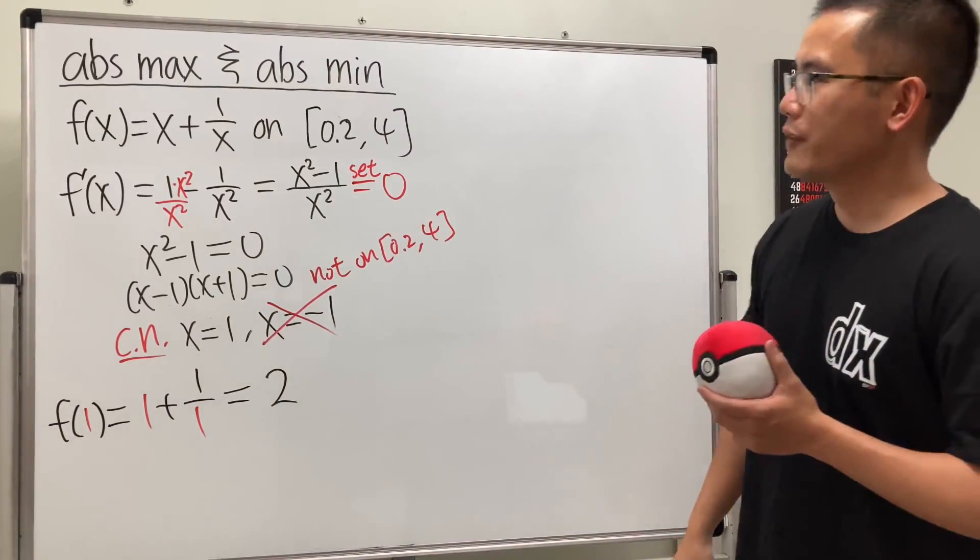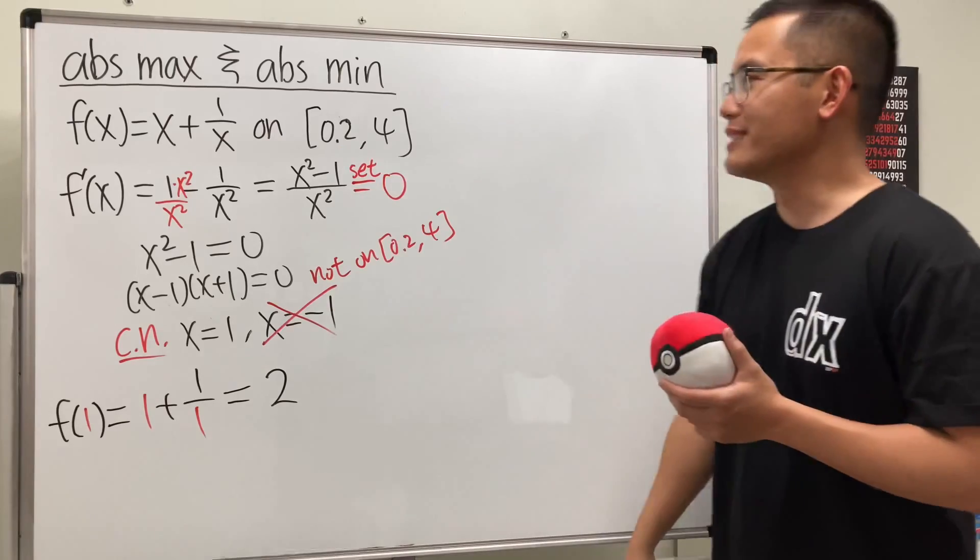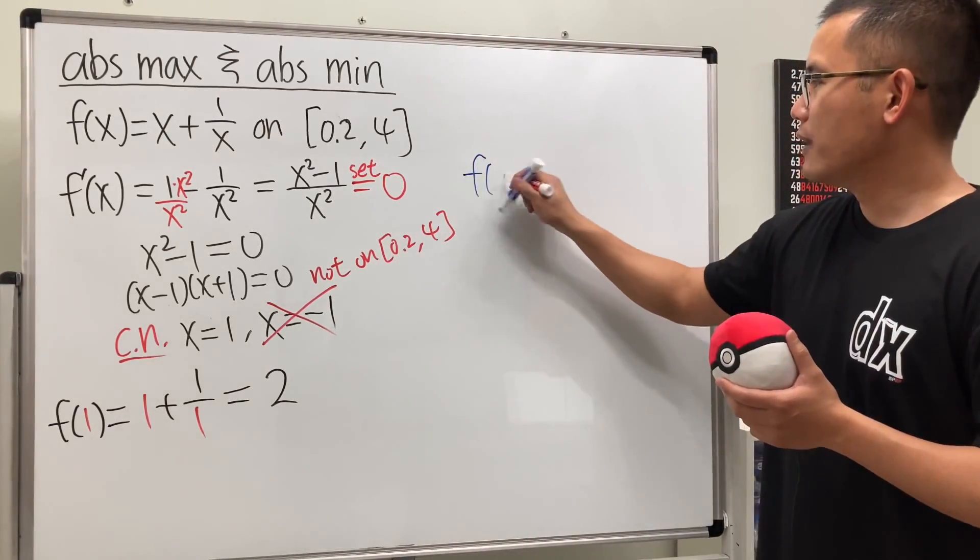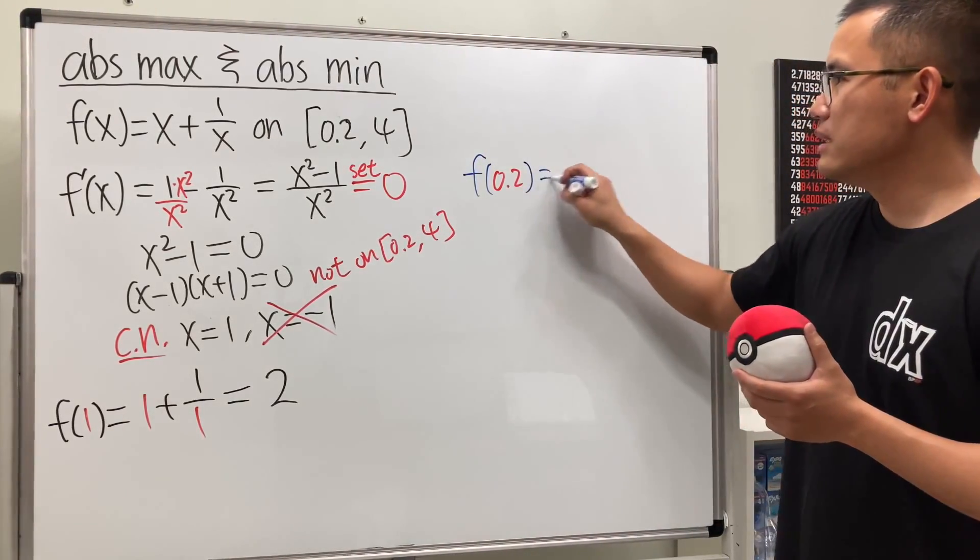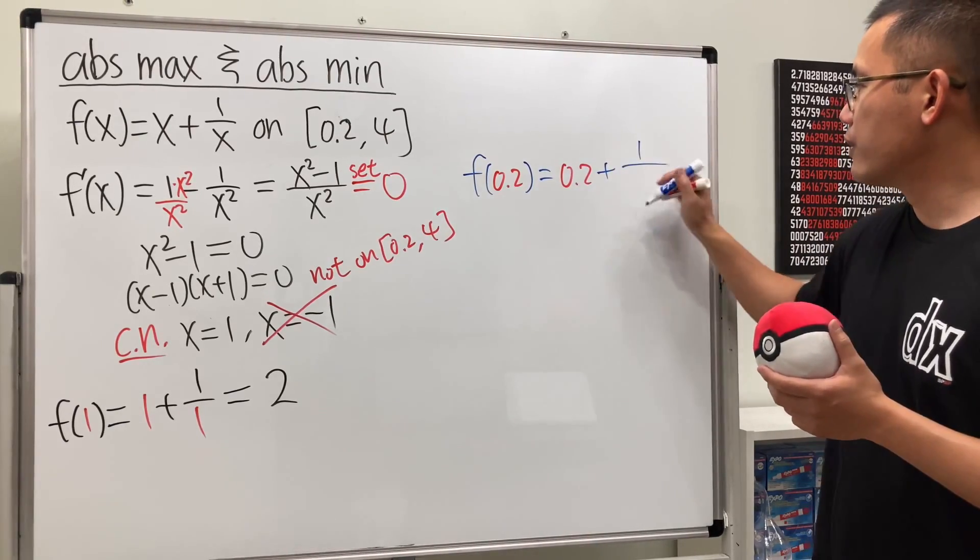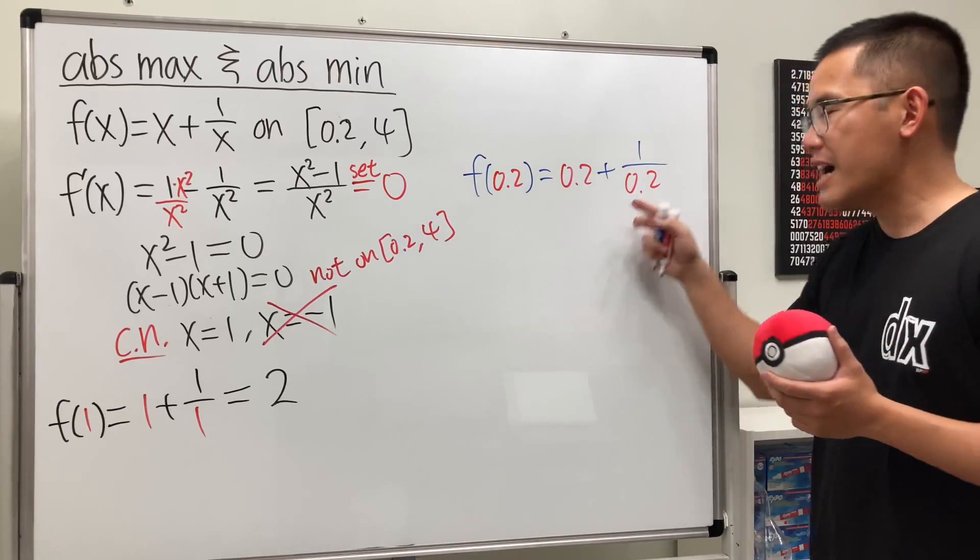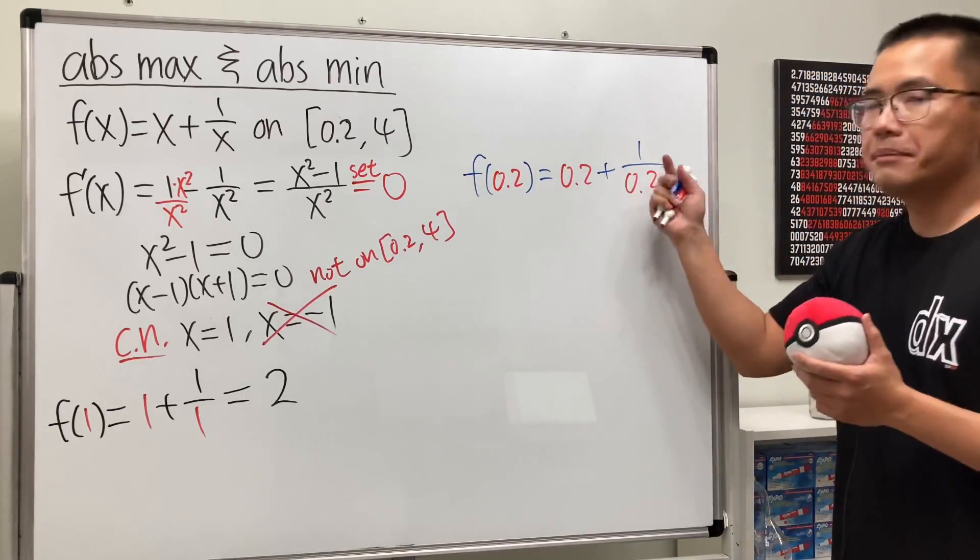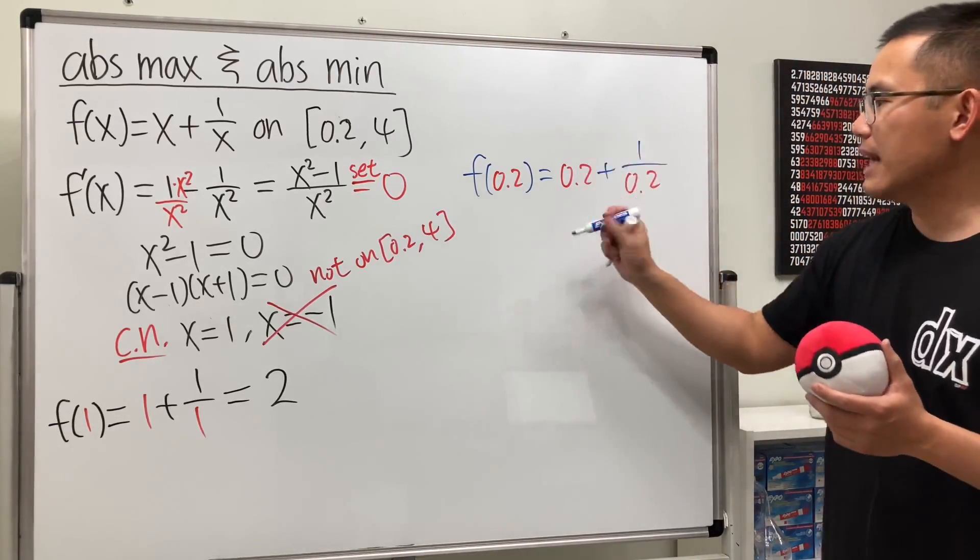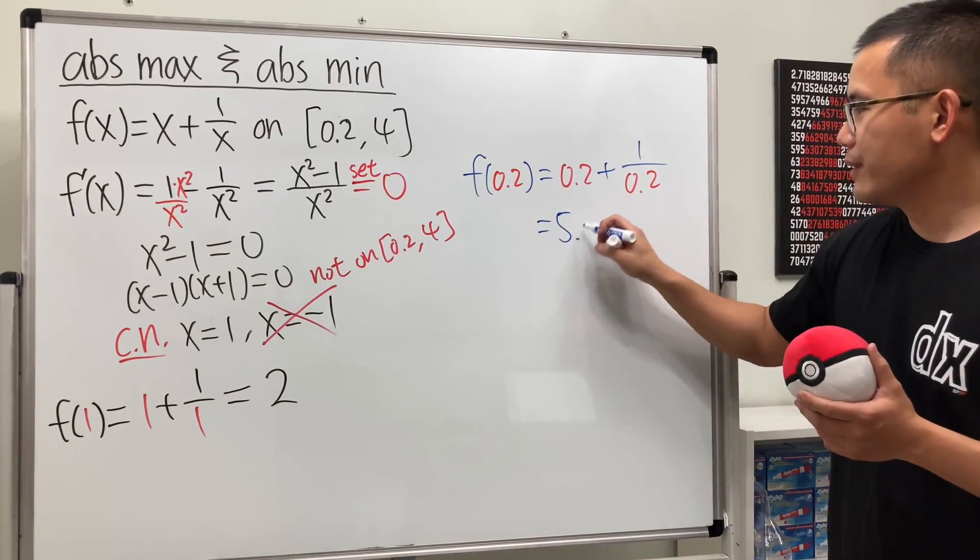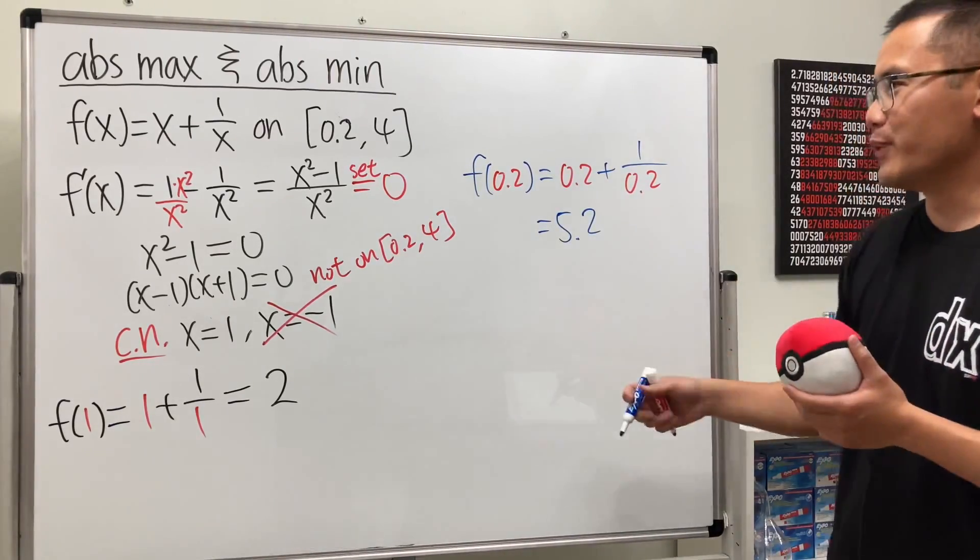Now we are going to check the value of the function at these two endpoints. So f(0.2) is 0.2 plus 1 over 0.2. 0.2 is the same as 1 over 5, so we do 1 over 1 over 5, which is just 5. 5 plus that is 5.2.